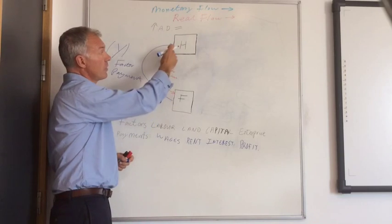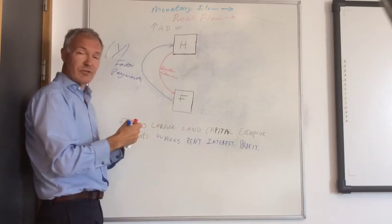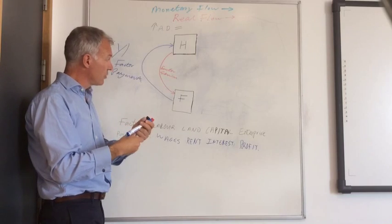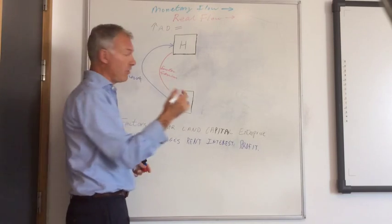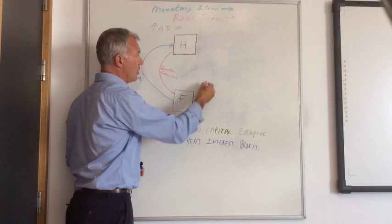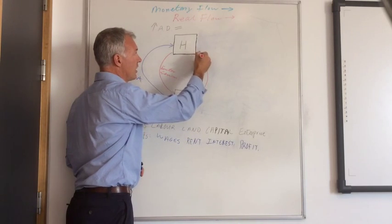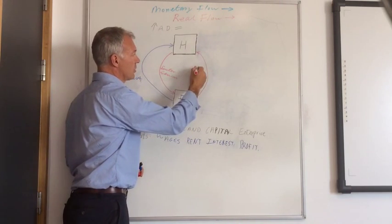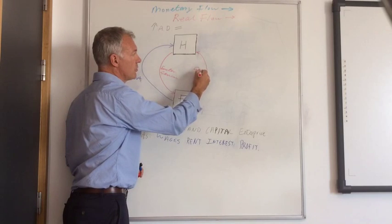So the income all goes to the households. What do the households do with their income? They spend it on goods and services. So the real flow of goods and services comes from firms to the household. And that's actual real goods and services.